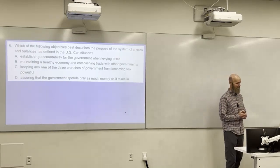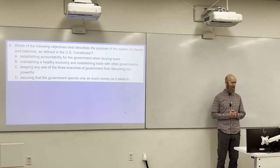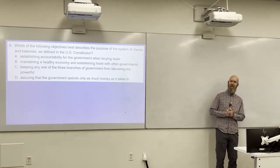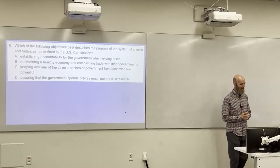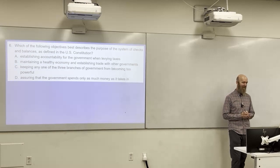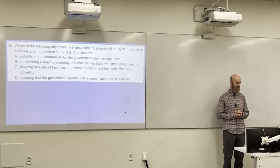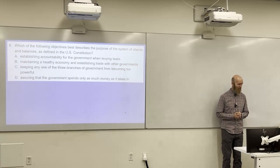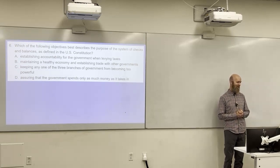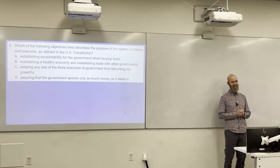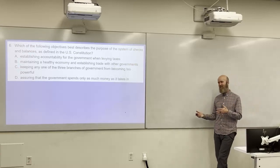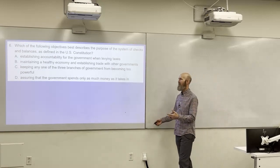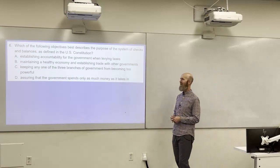Which of the following best describes the purpose of a system of checks and balances as defined in the U.S. Constitution? A: establishing accountability when levying taxes. B: maintaining a healthy economy and trade. C: keeping any one of the three branches from becoming too powerful. D: assuring the government spends only as much as it takes in. The answer is C — checks and balances keep each branch from becoming too powerful through separation of powers.